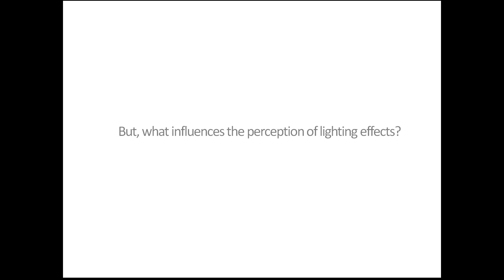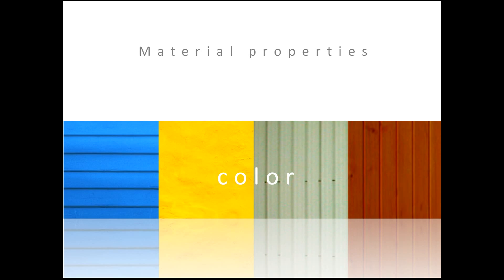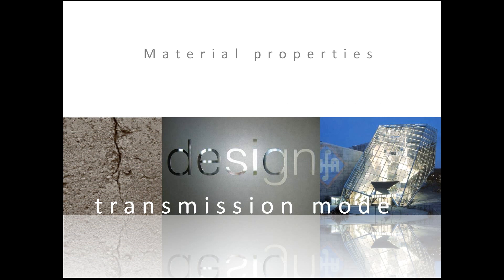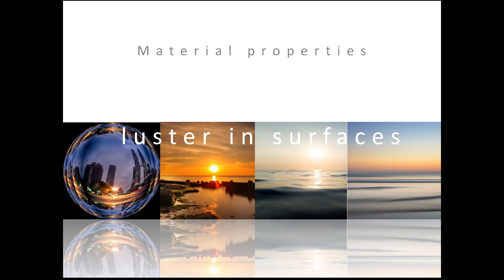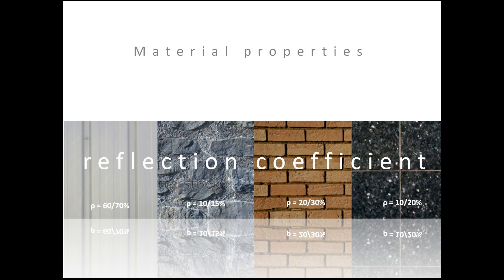But what influences the perception of lighting effects? Material properties. The way surfaces reflect light depends directly on the properties the material has. To determine the lighting levels, direction, and impression to be created on a surface, the following factors must be considered: color, texture, transmission mode, luster in surfaces, and reflection coefficient — but also the angle of incidence and the position of the observer in relation to the material. Let's now see a broad explanation of these factors.